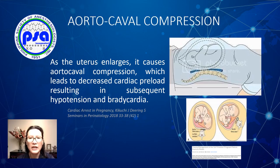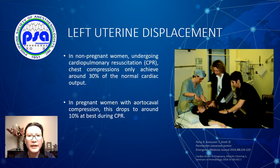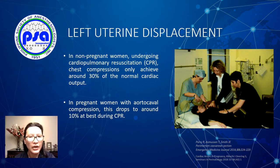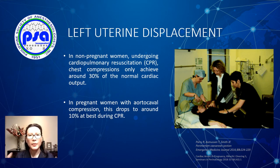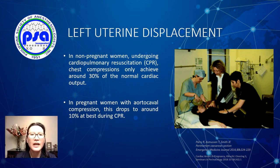First is aortocaval compression — prioritizing C, circulation. We must consider this obstacle in effective resuscitation. In non-pregnant patients, chest compressions can achieve about 30% of normal cardiac output, but with aortocaval compression, cardiac output drops to around 10%. You must get this obstruction out of the way. Pull the uterus in a scooping motion towards the patient's left side — pulling is better than pushing. The maneuver is lifting up the uterus and displacing it to the left side of the patient.